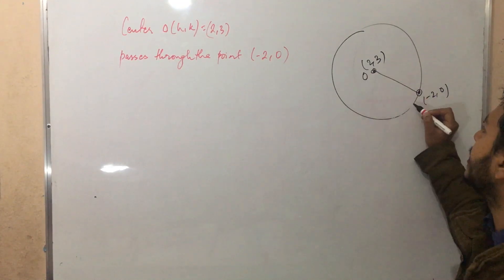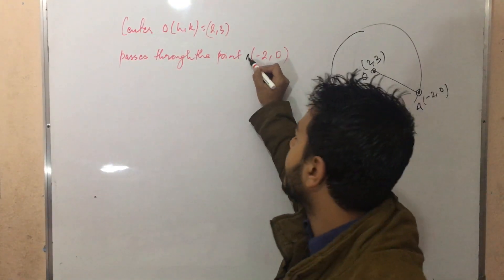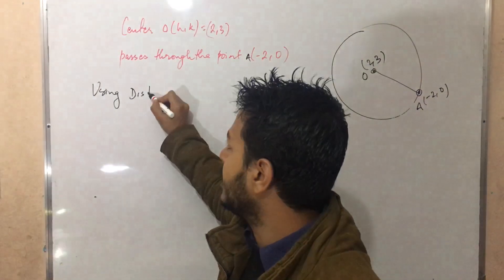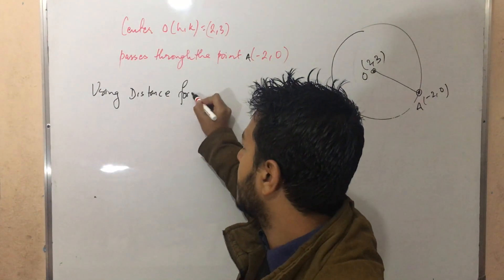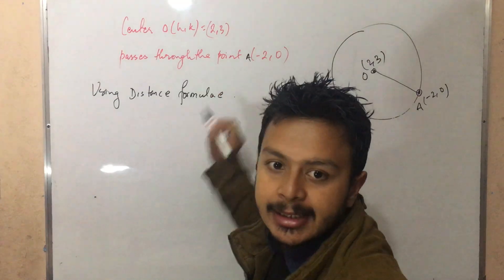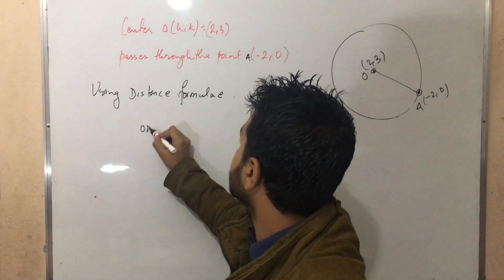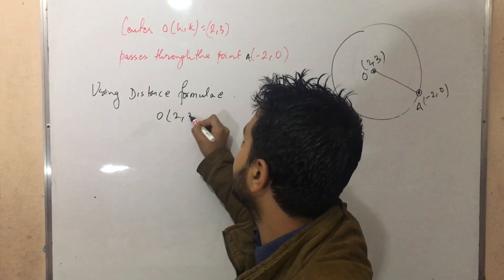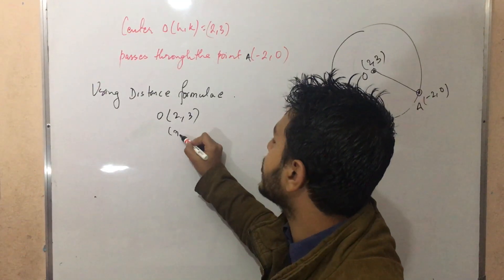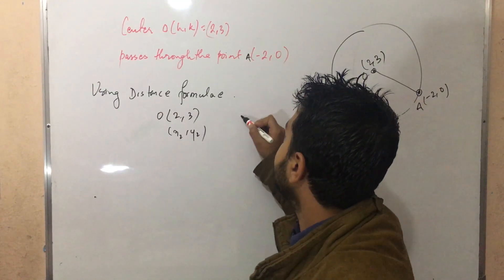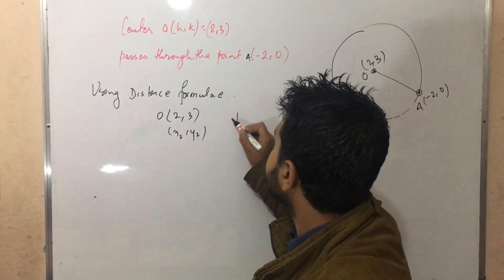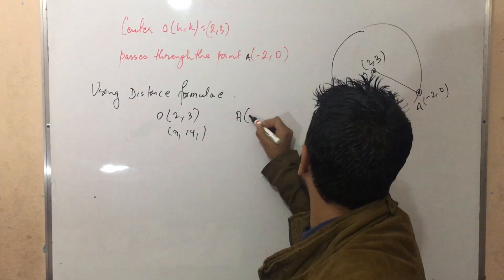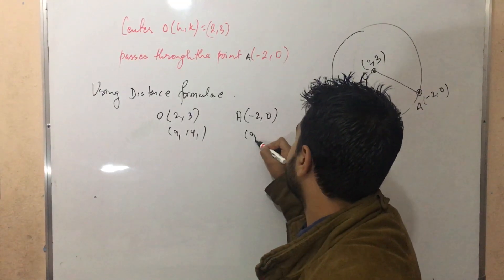Let's change this — I want you to change the distance. So now using the distance formula, very fast without wasting any time. O A squared: O is (1, 2, 3), X2, Y2 and X1, Y1. Point A is minus 2, 0 — so X2, Y2.